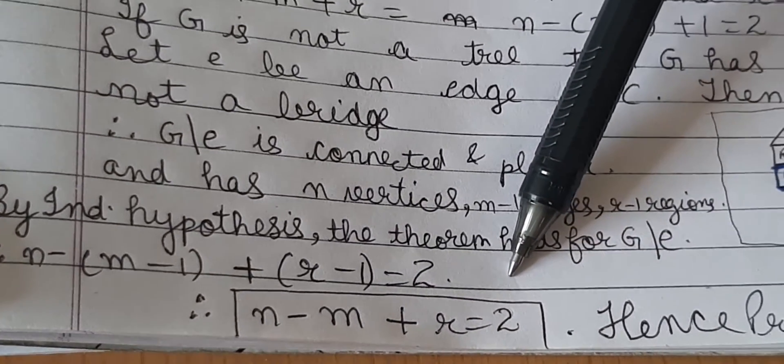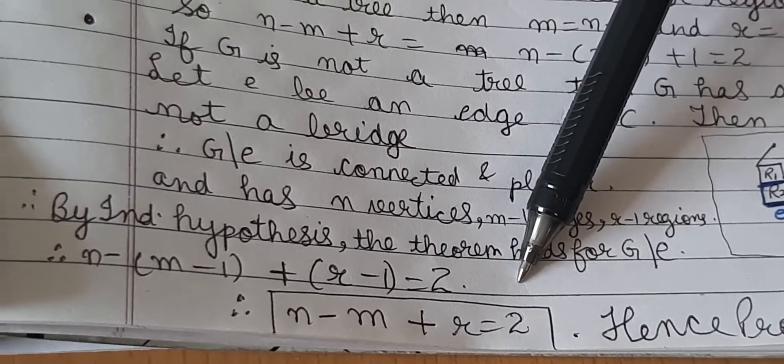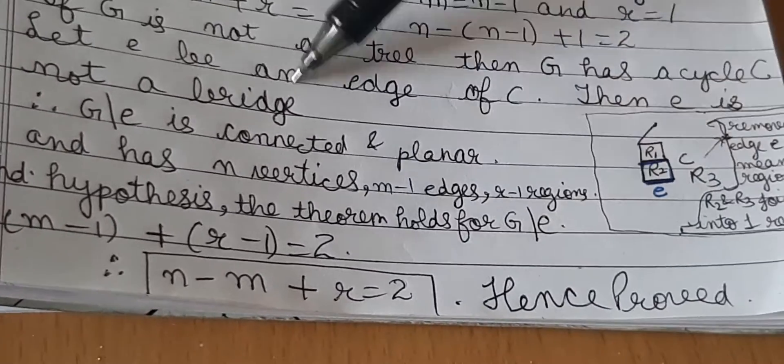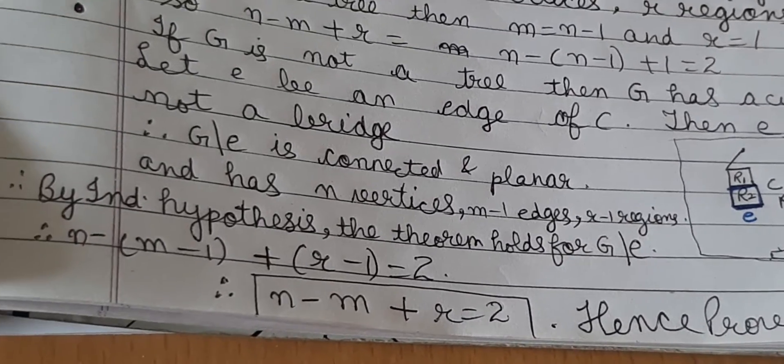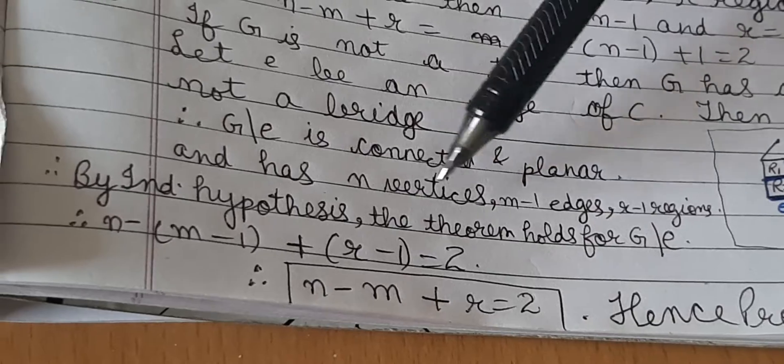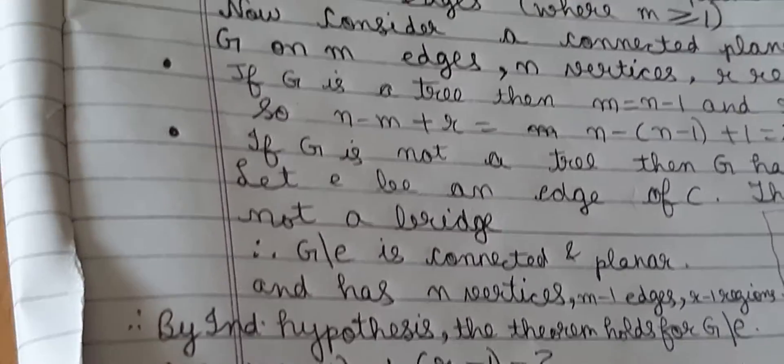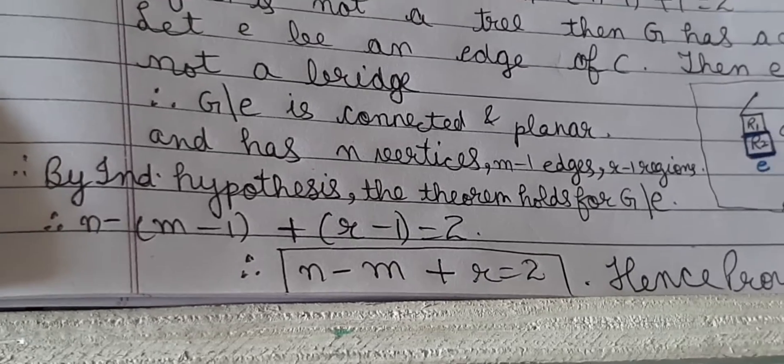And therefore by principle of mathematical induction, the theorem holds for all values of m greater than or equal to 0. So thus we know that a connected plane graph with n vertices, m edges and r regions will satisfy the equation n minus m plus r equals 2. Proof is done. Thank you.